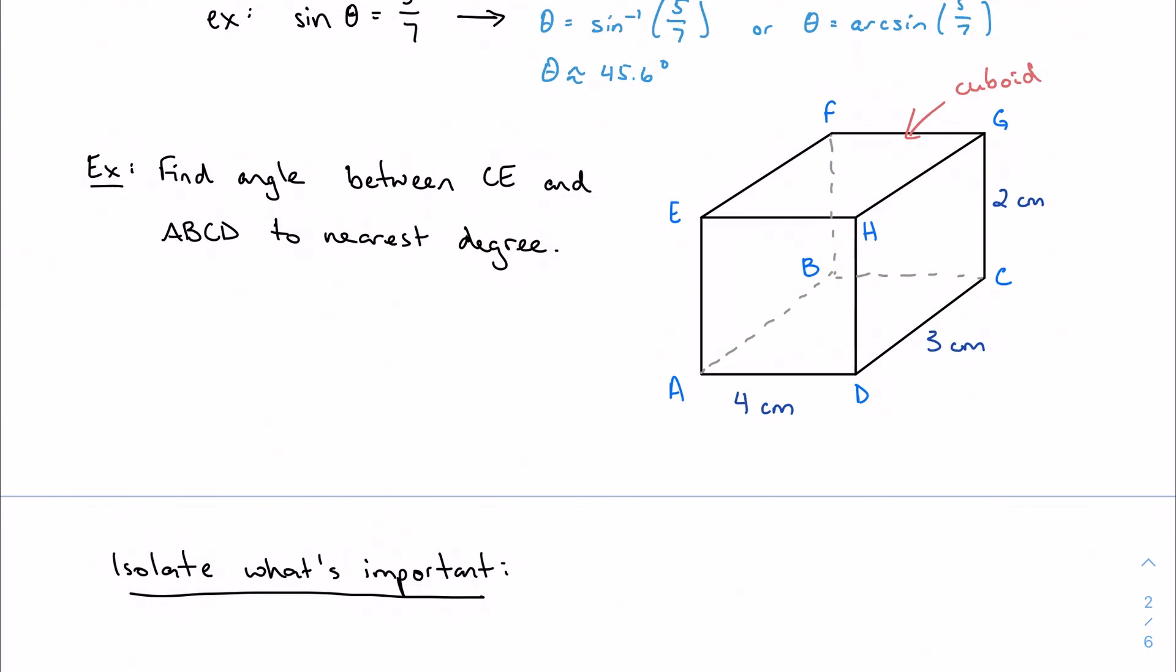So I have a cuboid, a prism, with dimensions 4 centimeters, 3 centimeters, and 2 centimeters. And what I'm being asked to do is find the angle between the diagonal CE, so this is a diagonal, right, because it's this here. I'm going from the vertex of one face up here to the vertex of the face down there. And the plane A, B, C, D, to the nearest degree.